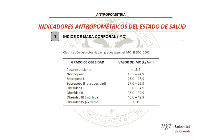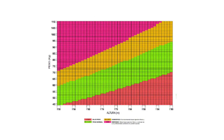Se considera normopeso cuando el IMC está entre 20 y 24,9. Si estuviera por encima de 25, estaríamos en sobrepeso, y por debajo de 20 tendríamos bajo peso, incluso desnutrición. Pero en este caso es normal.